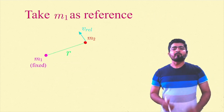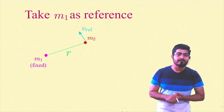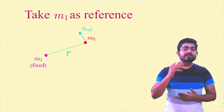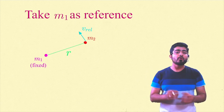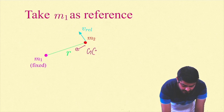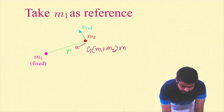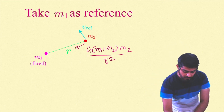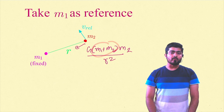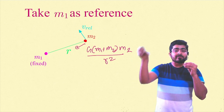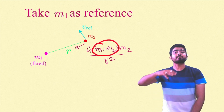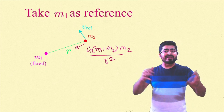Take m1 as the reference particle — m1 is fixed and m2 has some initial relative velocity. From the previous video, we apply a pseudo gravitational force, so the total force on m2 becomes G(m1+m2)·m2/r². Although m1 is fixed, the force formula uses m1+m2. We treat m1+m2 as the effective 'Sun mass' and solve just like a regular planetary system.